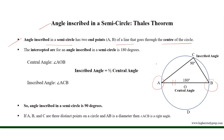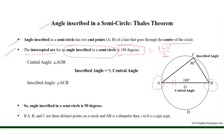Since a full circle is an arc of 360 degrees, each semicircle is an arc of half of 360 degrees. The intercepted arc for an angle inscribed in a semicircle equals 180 degrees, which is 360 degrees divided by 2. The central angle considering endpoints A and B is therefore 180 degrees.